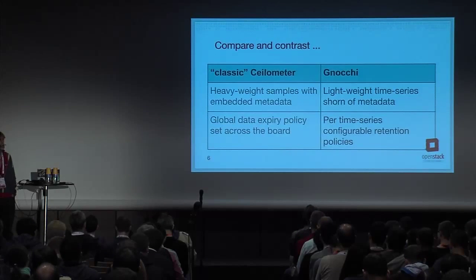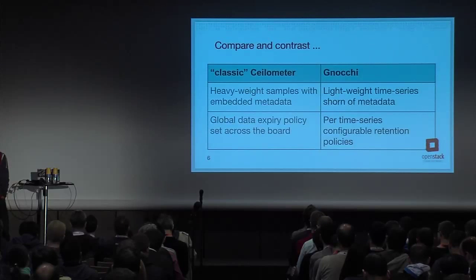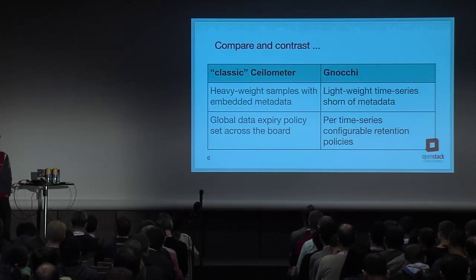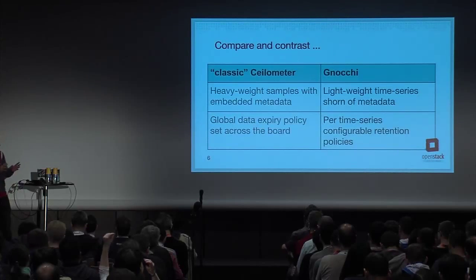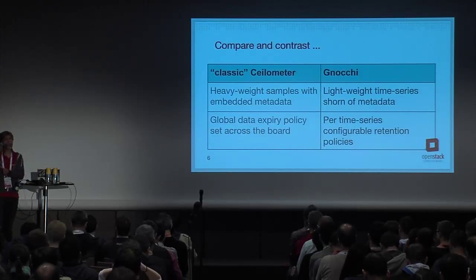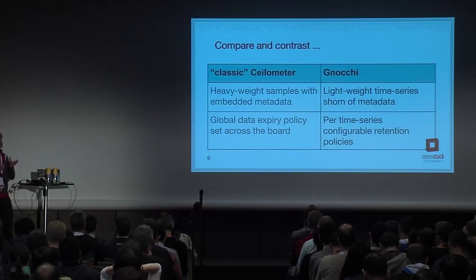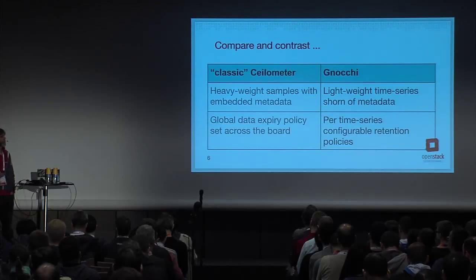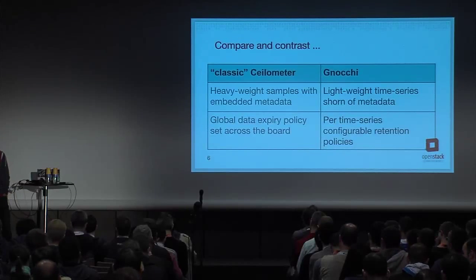Every time we take a new measurement, we store the actual value and the timestamp. All the other data we previously snapshotted on a per-sample basis, we'll manage in a different way. We have certain use cases in Ceilometer that depend on these sample data being repeated over and over, and we'll see that the strategies we have in mind will allow us to do it in Gnocchi in a much more lightweight way. That's the first axis of comparison.